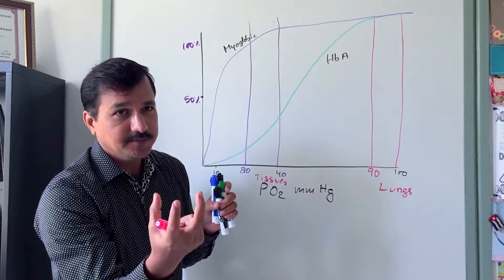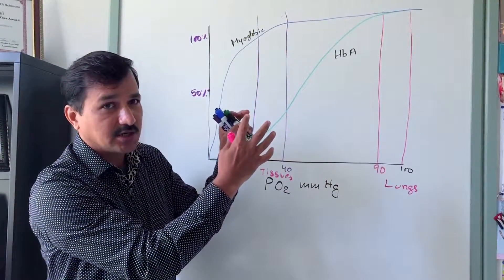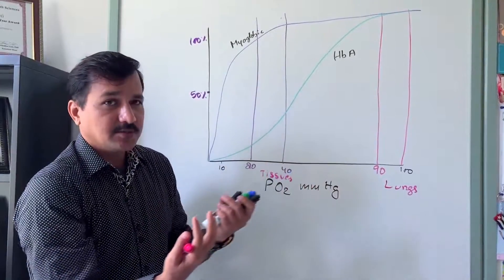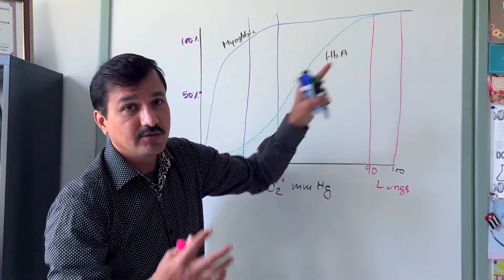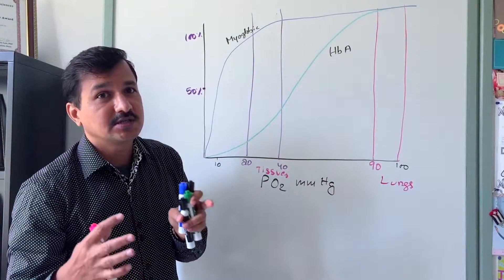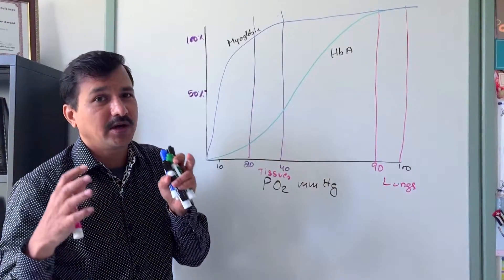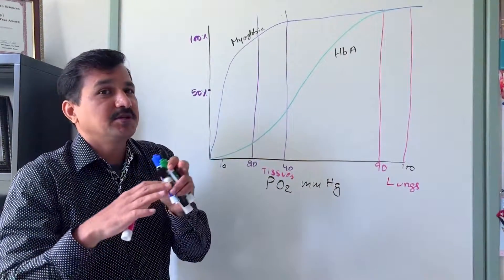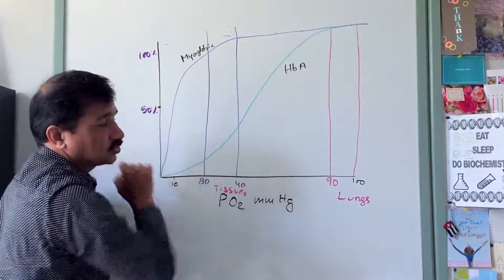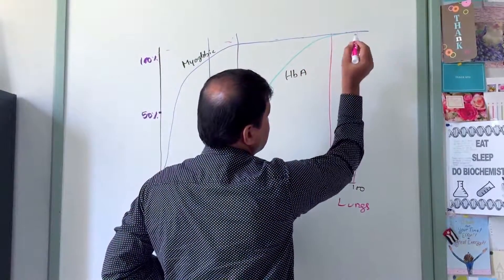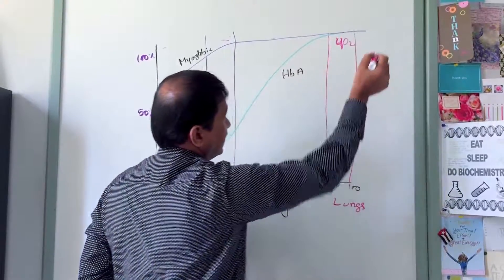At 90 to 100 millimeters of Hg in the alveoli, there is high partial pressure of oxygen. Red blood cells in the pulmonary circulation maintain this pressure, so hemoglobin becomes completely — 100% — saturated, with all four oxygen binding sites occupied. This corresponds to 100% on the y-axis.